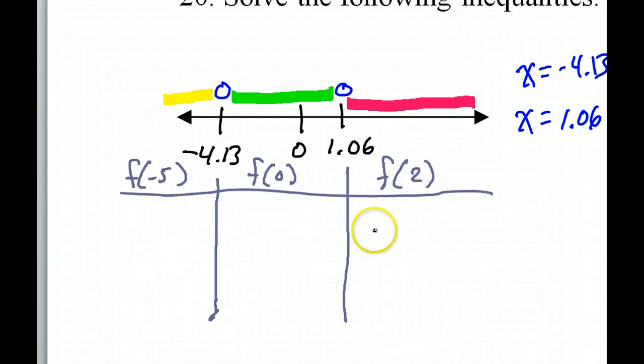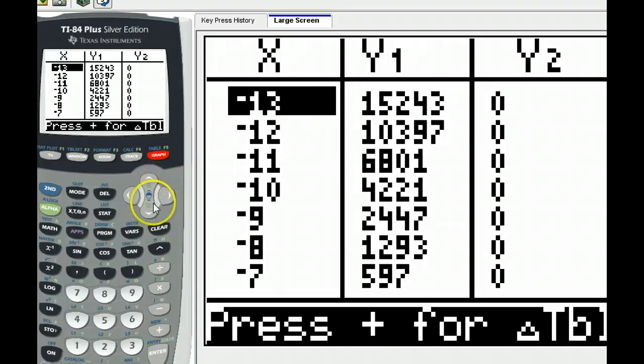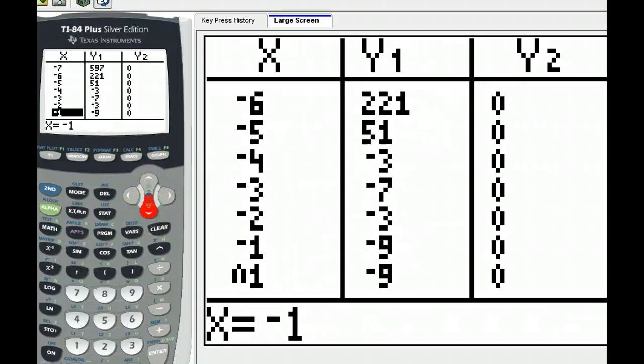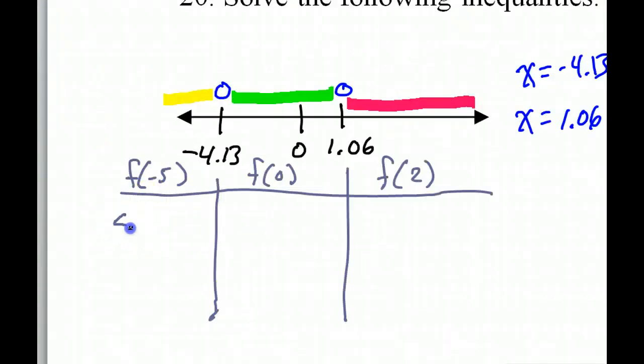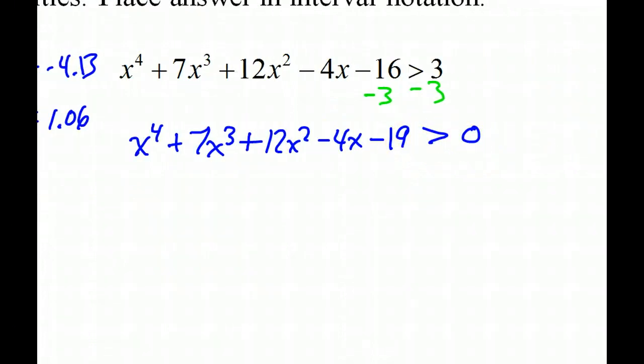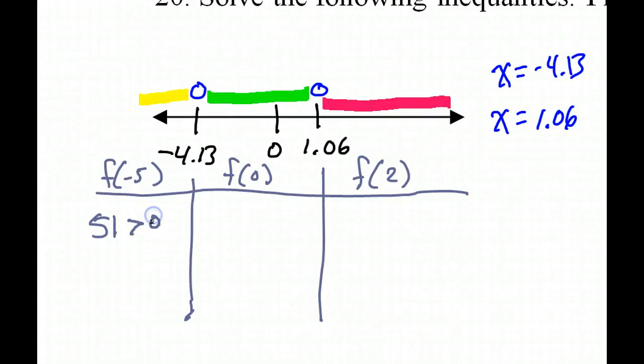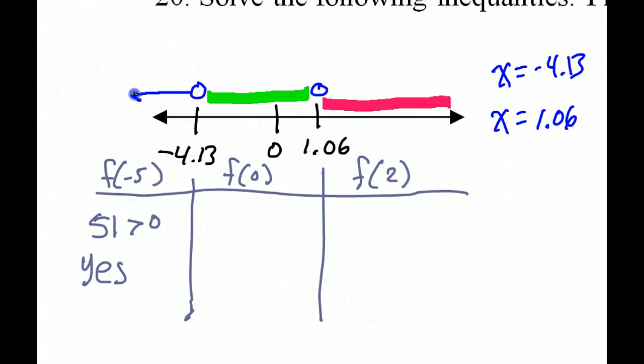Now I'm just going to use the calculator to evaluate these, especially since I already have them all typed in. Okay, so look at the table. And so my first value was at negative 5. So at negative 5, the value is 51. Okay, so I've got 51. And the question is, is that greater than 0? And obviously, yes, 51 is greater than 0. That means the yellow values are solutions. So I will show that the yellow values are solutions by drawing this arrow in the yellow zone.